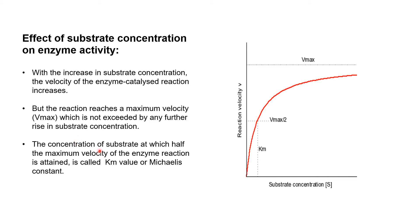The concentration of substrate at which half the maximum velocity of an enzyme reaction is attained is called the Km value, or Michaelis constant. This is a very important definition. The Km value represents the effect of substrate concentration on enzyme activity.